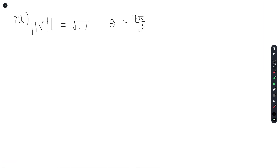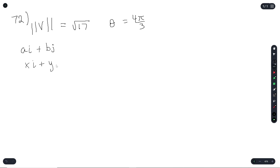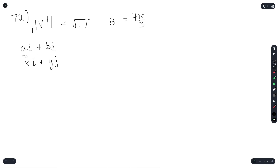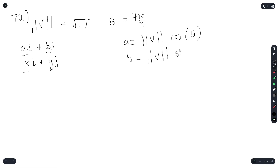In question 72, they give you the magnitude and theta and ask you to write it in linear combination form: a·i plus b·j. The formula is: a equals the magnitude times cosine theta, and b equals the magnitude times sine theta.